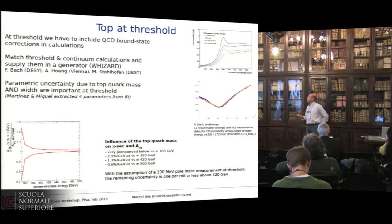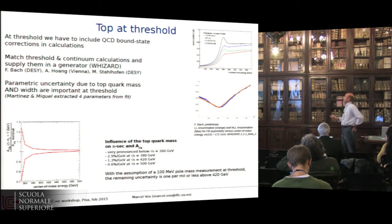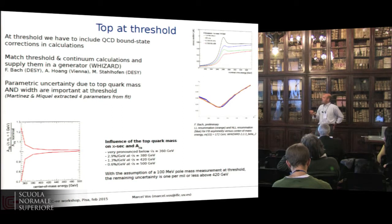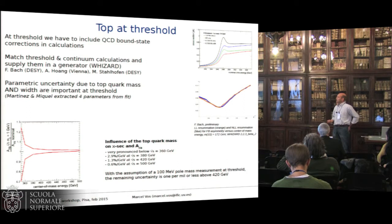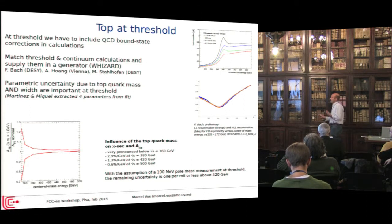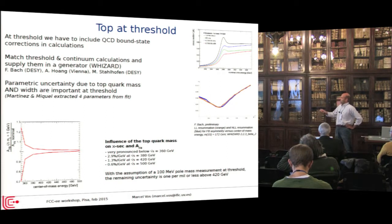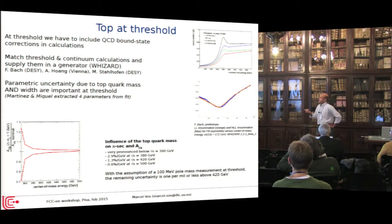So the threshold is a special region. We know there is this semi-bound state where QCD corrections give a sort of a peak, which is then washed out by experimental effects, ISR, beamstrahlung. Calculations exist of this peak to quite good precision. And people are working now on matching those calculations with a continuum calculation, doing this for WBWB rather than TT bar, and introducing all that in a generator.